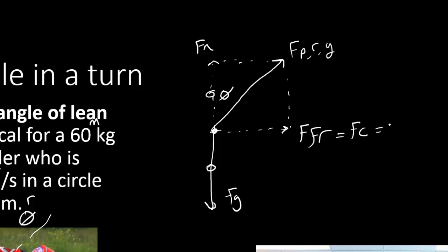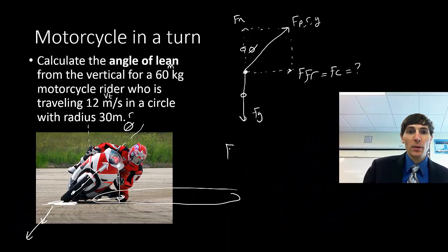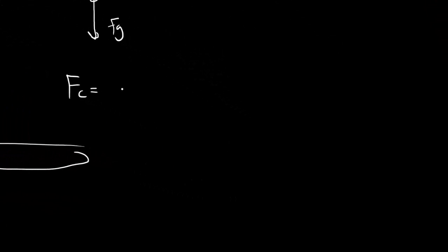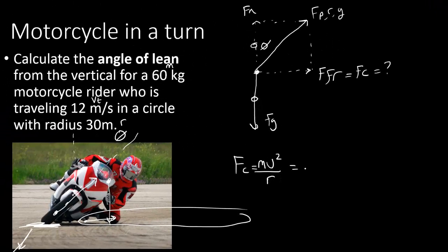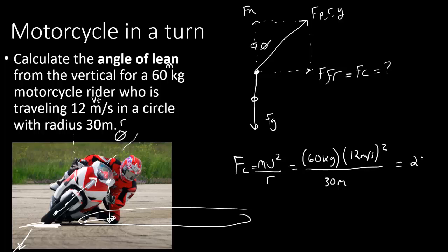So we're looking for our centripetal force. We're going to need that first before we can find this angle. I look at my equation list and I notice that the centripetal force is equal to the mass times the velocity squared over r. Well, the problem gives us all of those variables. So I'm going to plug in my 60 kilograms, my velocity was 12 meters per second, we're going to square that, and then we divide by the radius of this circle, which was 30 meters.